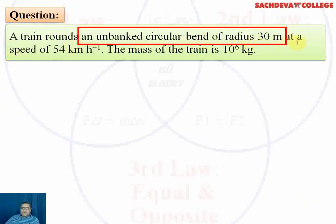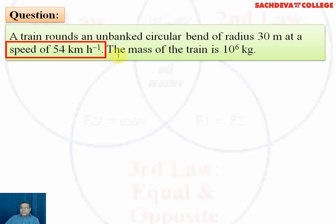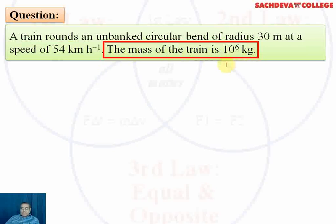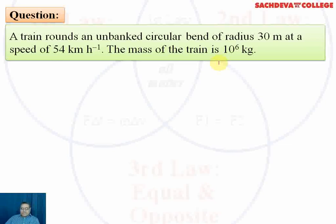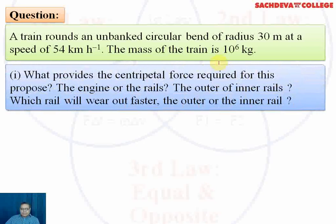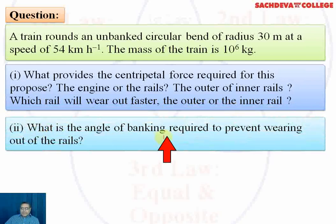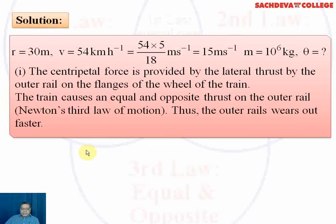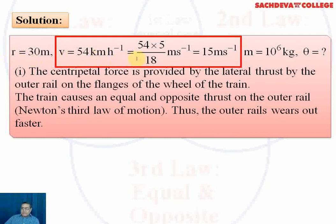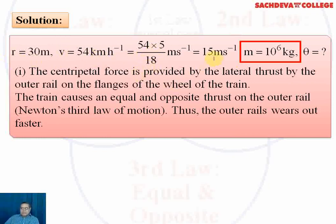In the next question, a train rounds an unbanked circular bend of radius 30 meters at a speed of 54 kilometers per hour. The mass of the train is 10⁶ kilograms. Writing the data: radius = 30 m, mass = 10⁶ kg, speed = 54 km/h × 5/18 = 15 meters per second. We need to find what provides the centripetal force and which rail wears out faster.